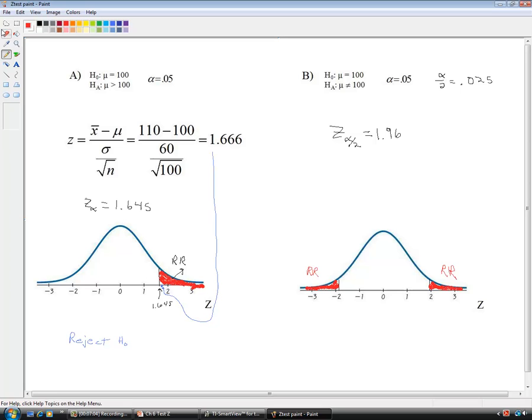Now, our value doesn't change. Our value, 1.67, is the same as it was before. But now, it doesn't quite make the threshold. Our 1.67 falls right about here, which is not quite in the rejection region. So in this case, we fail to reject.